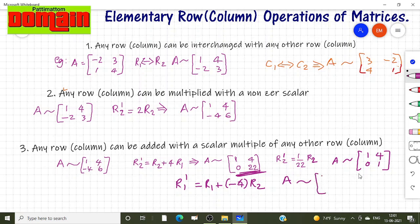This is equal to: First row 1 is added with -4 times 0. That means 1 only. And 4 is added with -4 times 1, which is -4. So we get 0. Second row as it is we write here.